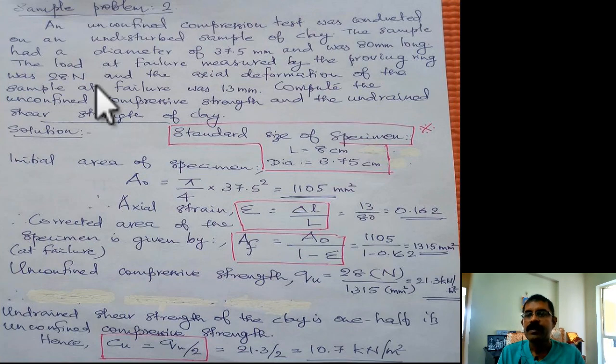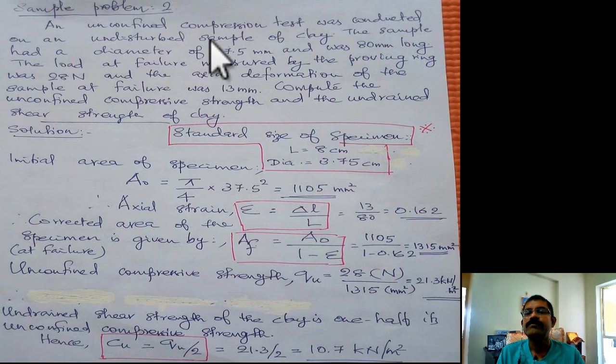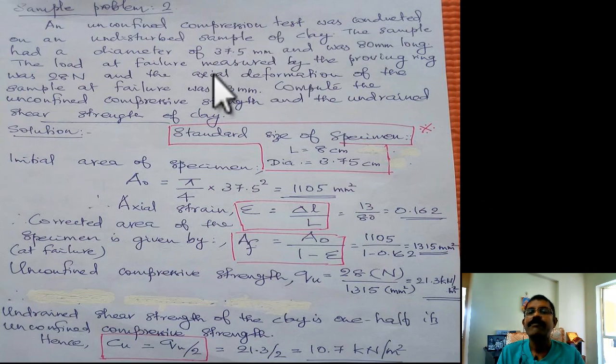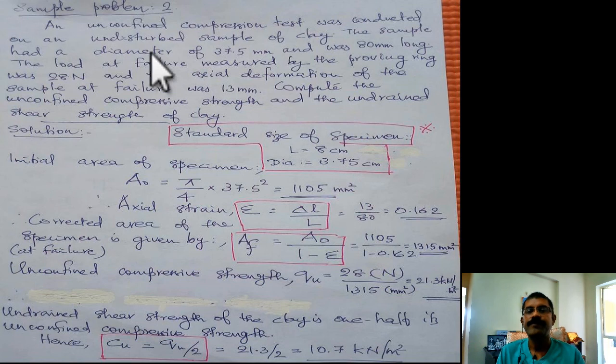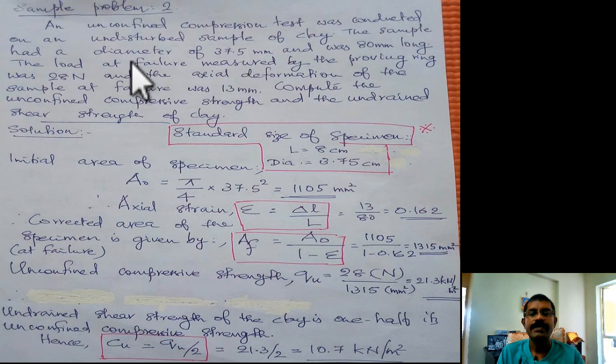In this numerical problem, a test detail on unconfined compression test is given. A test is done on undisturbed sample of clay. The sample had a diameter of 37.5 millimeter and 80 millimeter long.